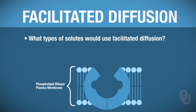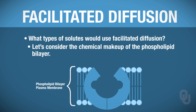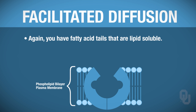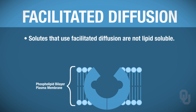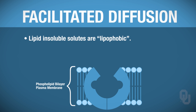Let's talk about what types of solutes would use facilitated diffusion. You need to think about the chemical makeup of the phospholipid bilayer — you've got your fatty acid tails that are lipid-soluble. Solutes that freely diffuse have a high permeability because they're lipid-soluble or lipophilic. Solutes that have to use facilitated diffusion, however, are not lipid-soluble — they're lipid-insoluble, which tells us that they are lipophobic.